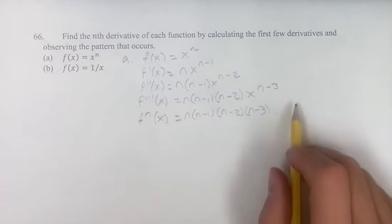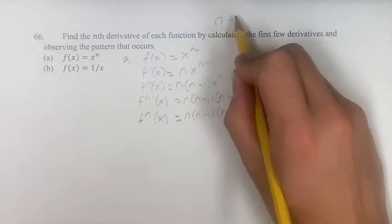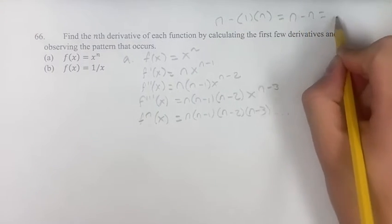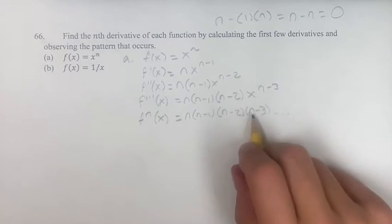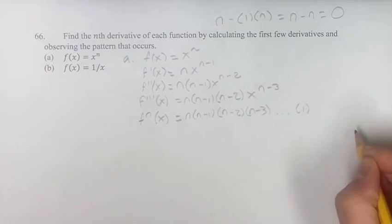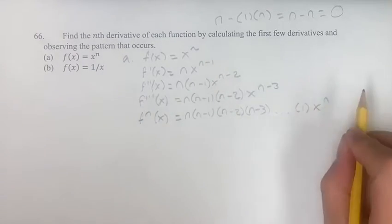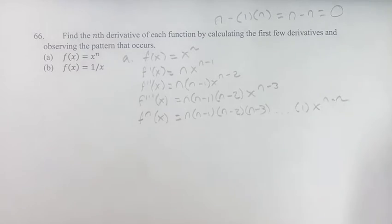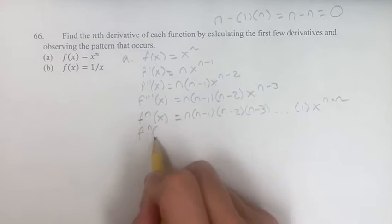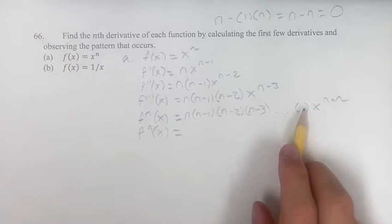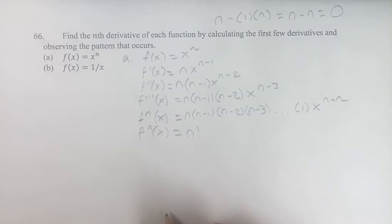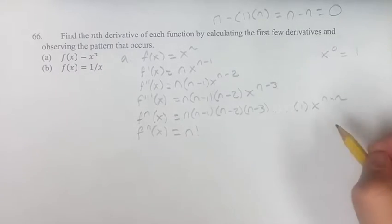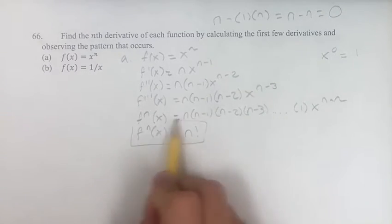If we're starting at n and going downwards, after subtracting 1 a total of n times, you're doing n minus n, which is 0 — but actually the product goes down to 1. For the exponent: the first derivative has x to the n minus 1, the second has x to the n minus 2, the third has x to the n minus 3, so the nth derivative has x to the n minus n, which is x to the 0, which is just 1. So the nth derivative of x to the n is n factorial.